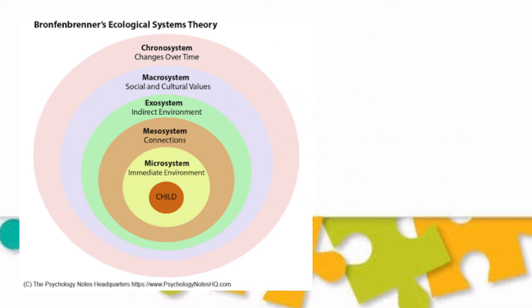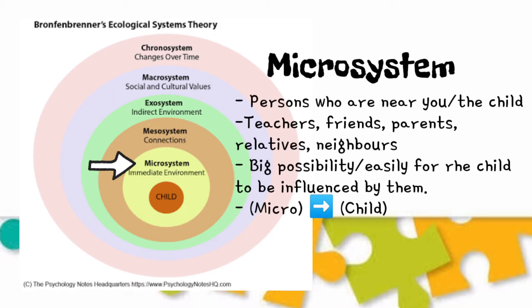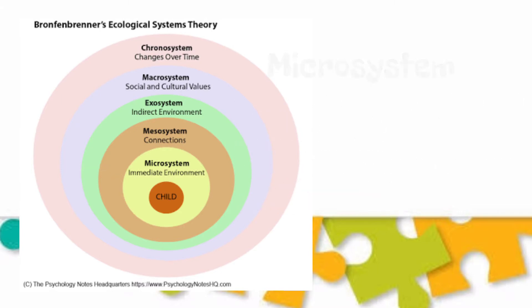Next to it is the micro-system. This involves the persons who are near you or the child. It can be your parents, friends, teachers, neighbors, or anyone who can easily communicate with you. So there's a big possibility for you to be influenced by them in your attitude or behavior.